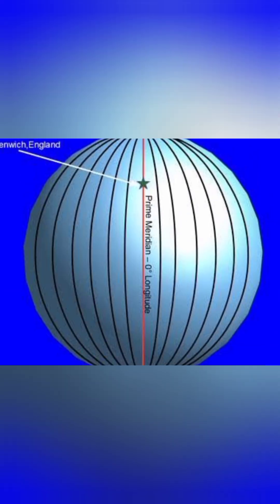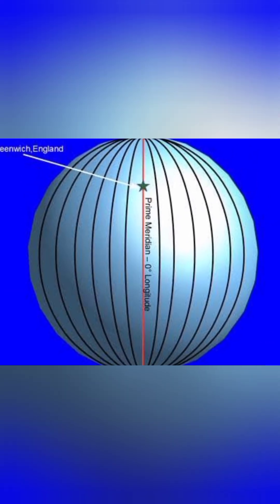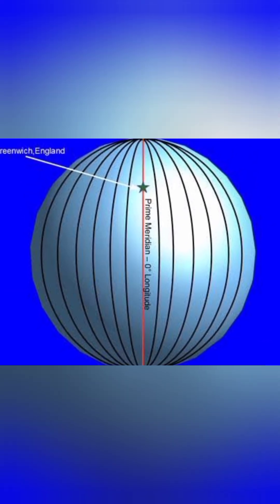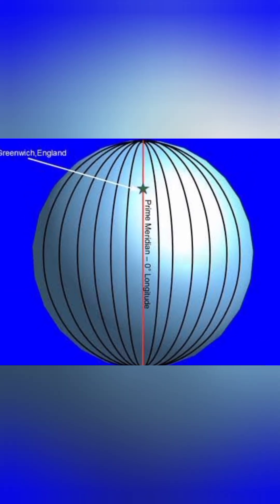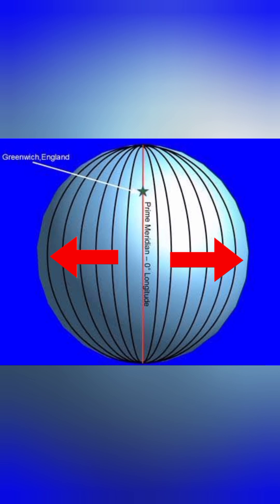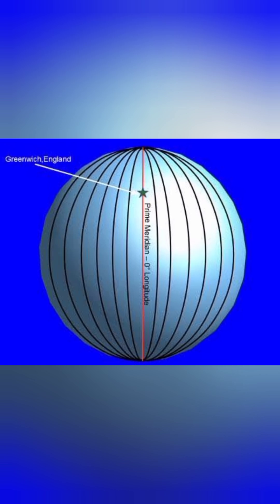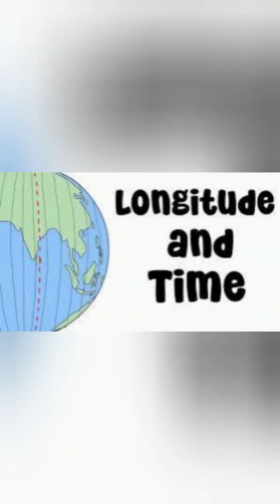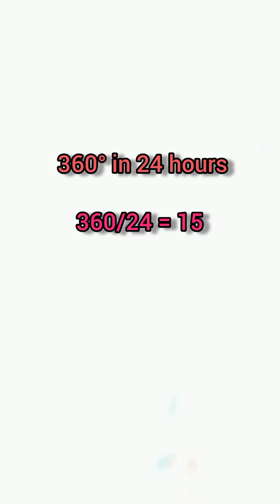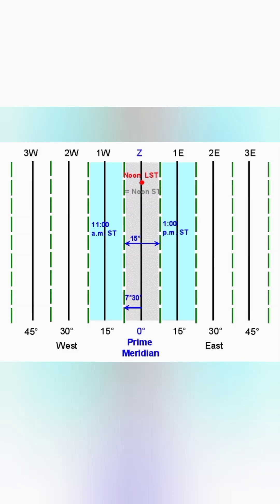Longitude lines run vertically, like slices of an orange. They tell you how far east or west you are from the prime meridian. Longitudes are also used to calculate time — the Earth rotates 360 degrees in 24 hours, meaning each 15 degrees of longitude corresponds to a 1 hour time difference.